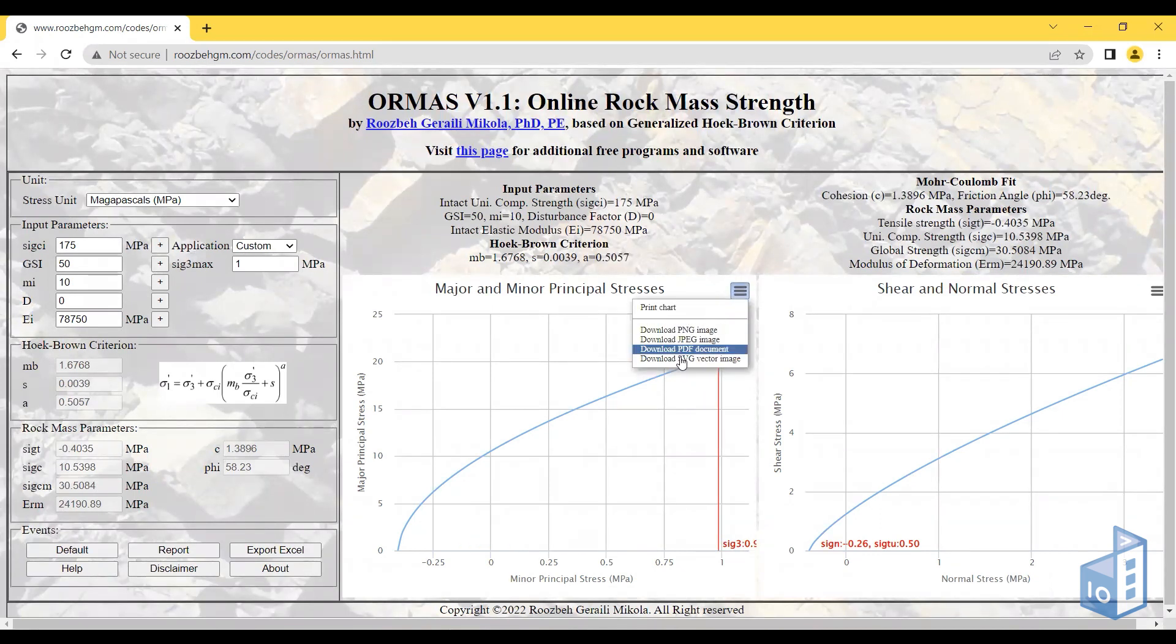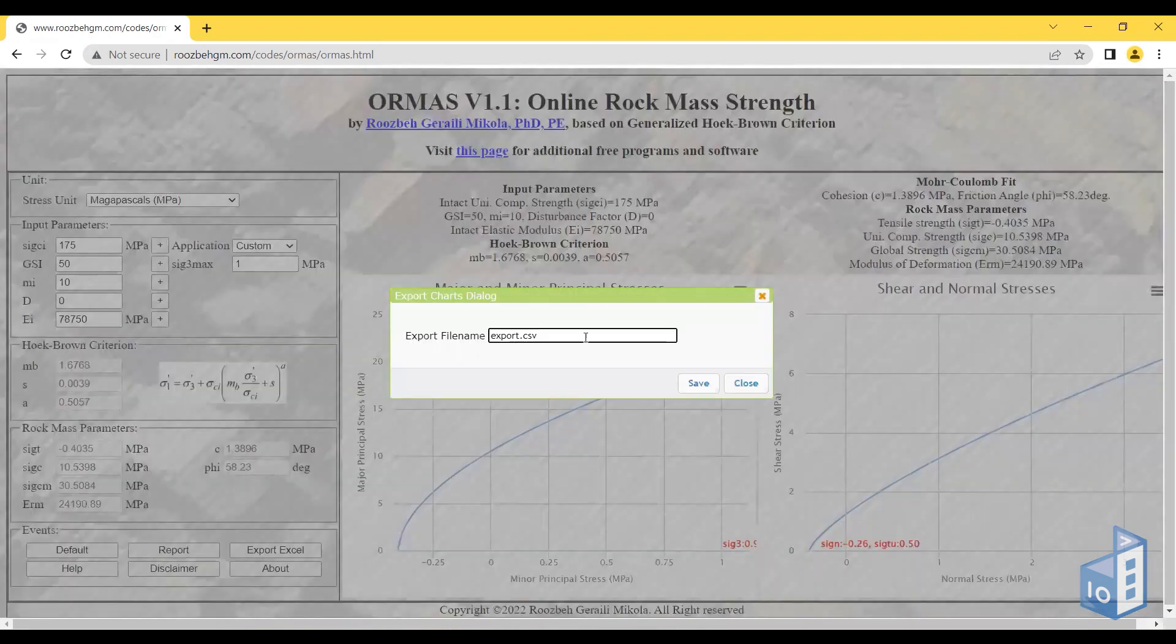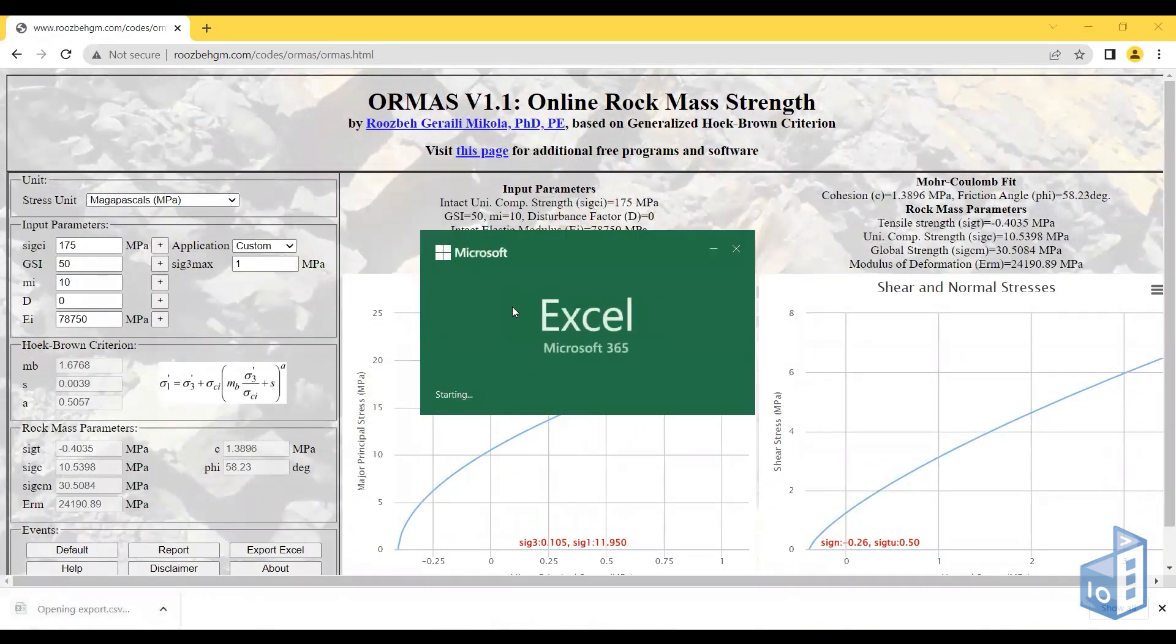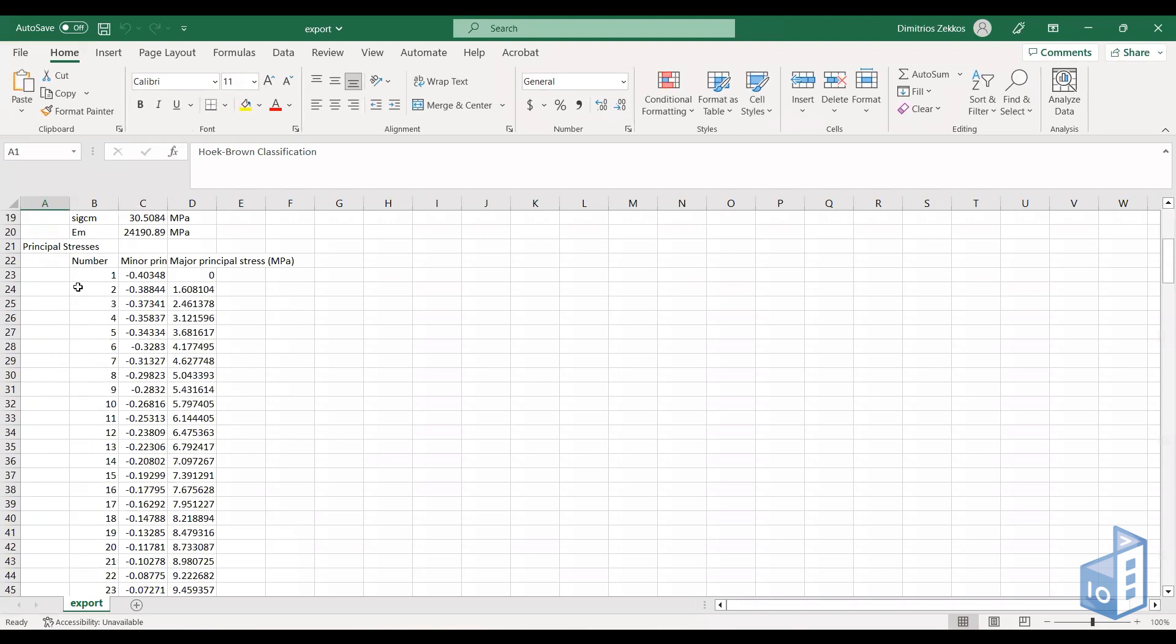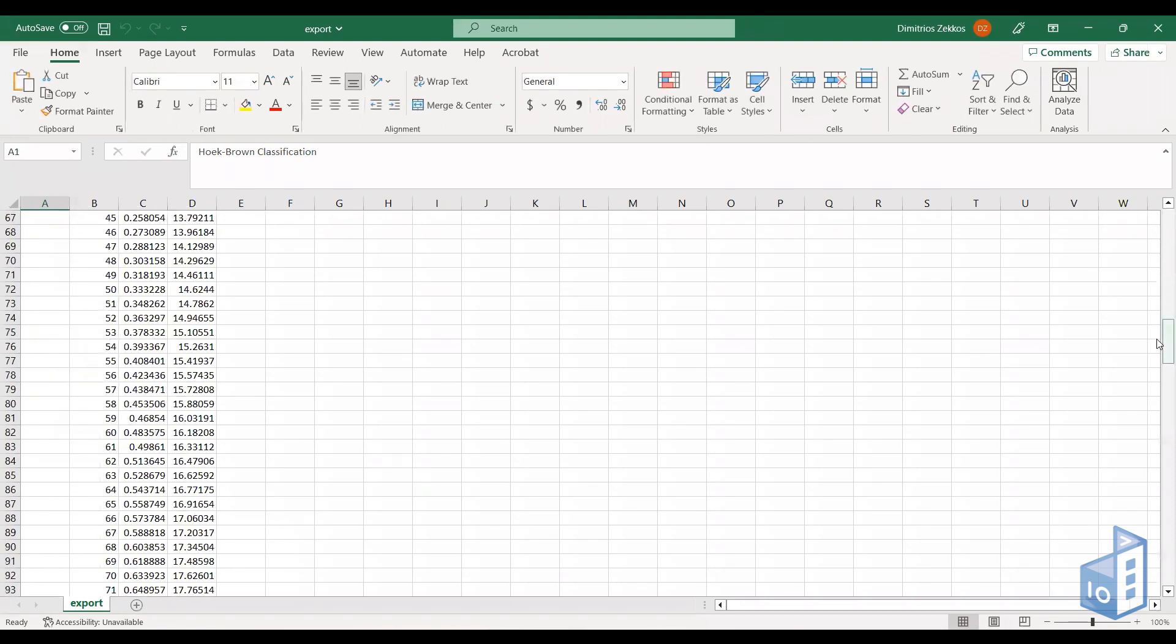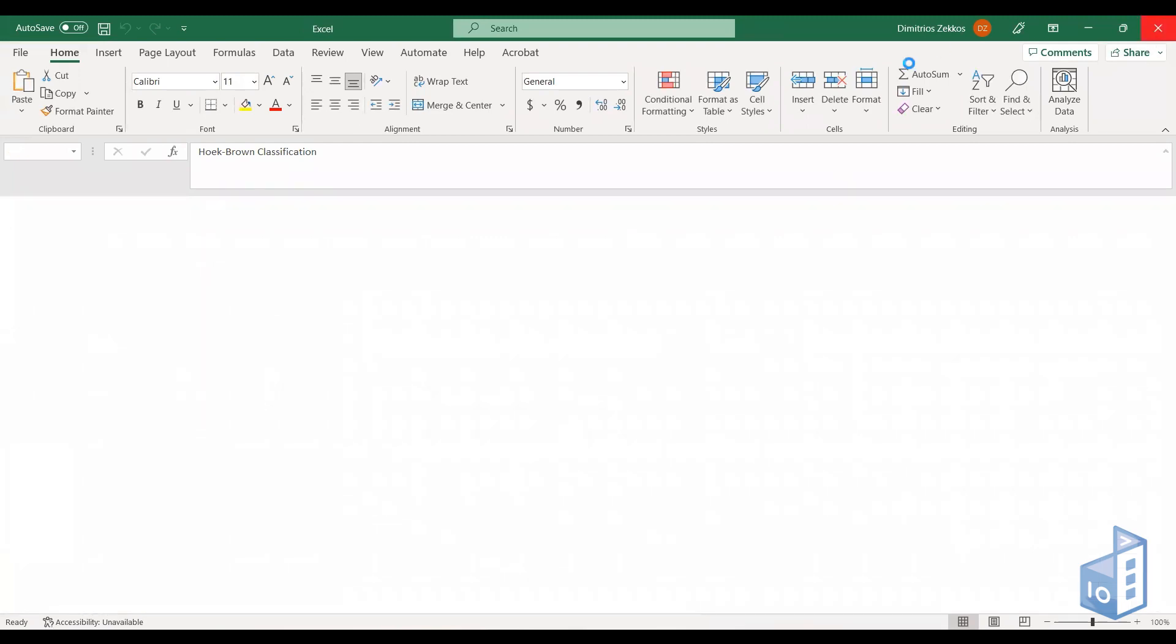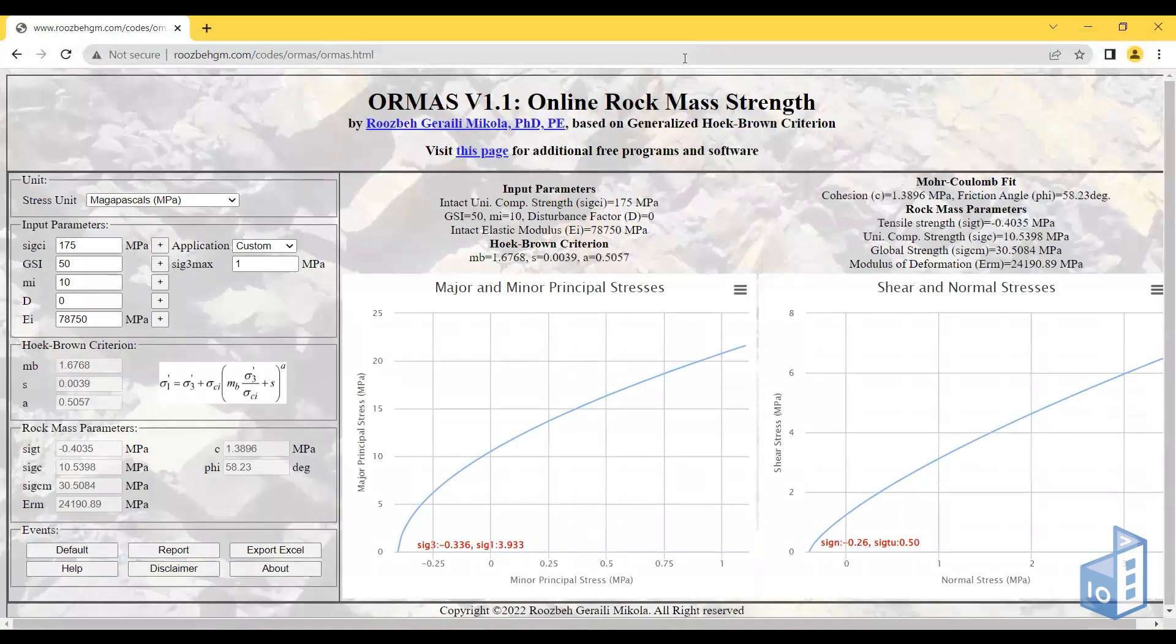There's also this button where you can export the data as a CSV file. You get all the data you see in the plots as well as input and output, which you can plug into some other analysis if needed. Overall, this is a really easy-to-use widget that you can even use in the field.